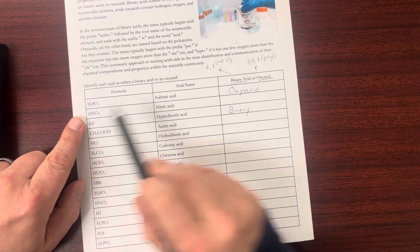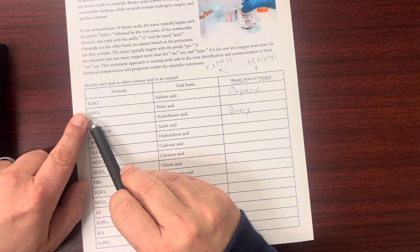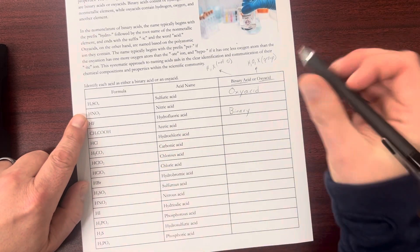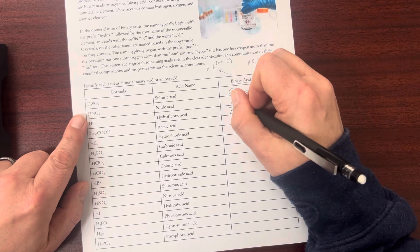Nitric acid, the next one, has hydrogen, oxygen, and something else. So that one is oxy acid.